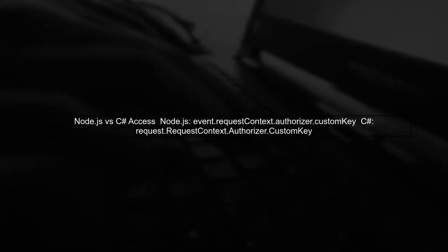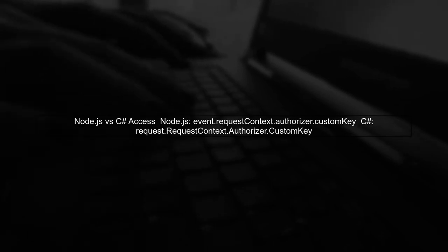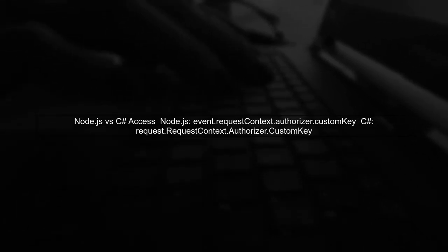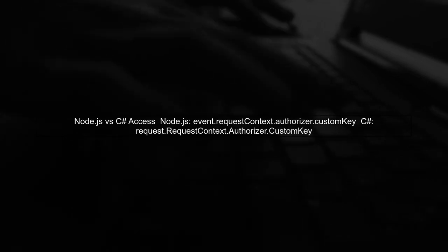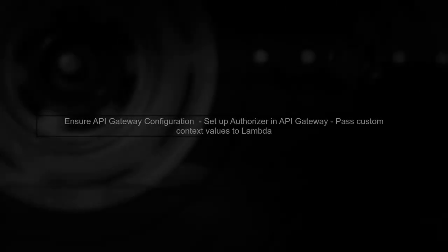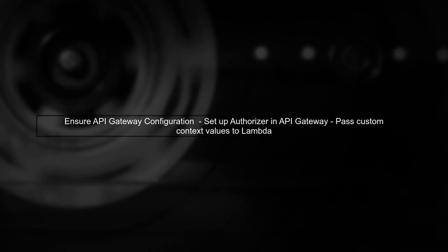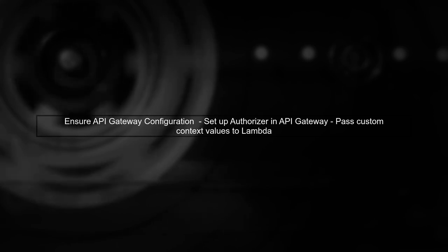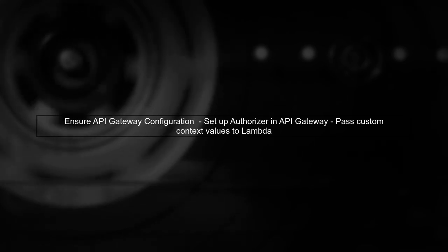Unlike Node.js, where you can easily access custom keys using a simple syntax, in C-sharp you need to ensure that the authorizer values are correctly set in your API Gateway configuration. Finally, make sure your API Gateway is configured to pass the necessary authorizer information to your Lambda function. This will allow you to access the custom context values as intended.